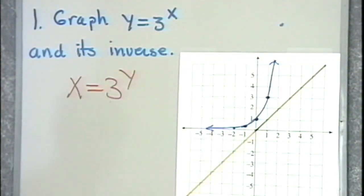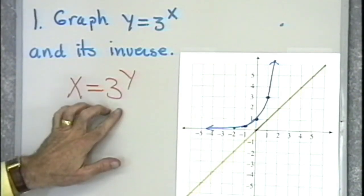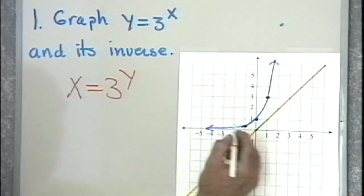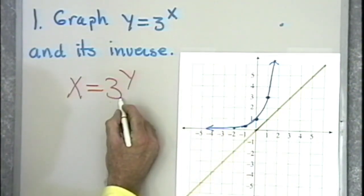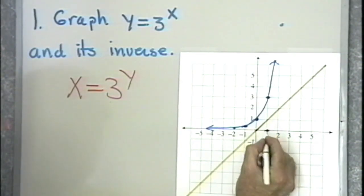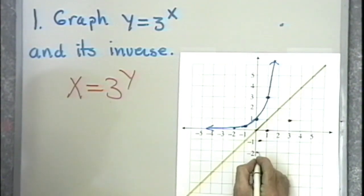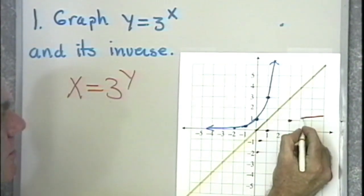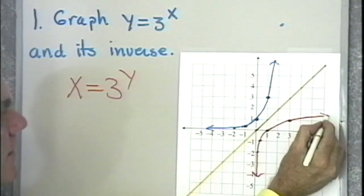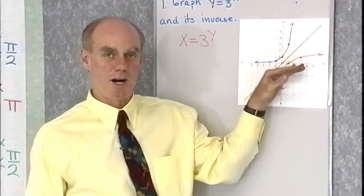Now, the equation of the graph I have here, y equal 3 to the x, and the graph I want, x equal 3 to the y, will have symmetry about the line y equal x. So I'll simply graph this function by reflecting the blue graph around the line y equal x. I get that point, this point, down here this point, and then here and here. So this graph comes down through (1, 0) and approaches the y-axis. And you can see that they have symmetry about the line y equal x.